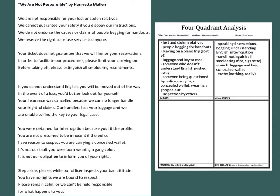Then we move on to emotions. With emotions, let's look at the explicit ones first — ones that are named or described in the poem. Explicit emotions include the 'carrying on,' the idea of freaking out and complaining. You've got the smoldering resentments. Going to the third stanza, you've got loss — in the context of the plane ride metaphor, a loss would mean losing your luggage, but it could be emotional as well, which is why I'm putting it in explicit. Then frightful claims, innocence, bad attitude, and responsibility — it's kind of what the whole poem is about.